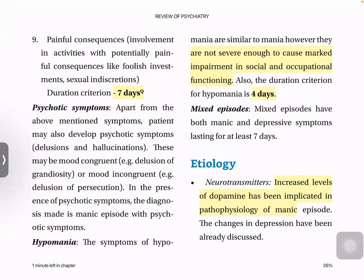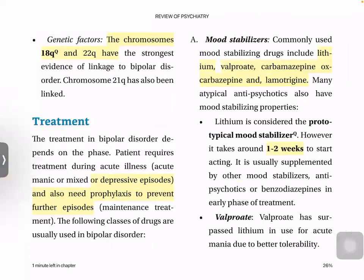Psychotic symptoms like delusions and hallucinations can also be present in mania — again, mood congruent or mood incongruent. Hypomania is similar to mania but not severe enough to cause social and occupational impairment. The duration criterion for hypomania is four days. In mixed episodes, both manic and depressive symptoms are present and should last at least seven days. Dopamine is increased in manic episodes. Genetic factors link bipolar to chromosomes 18 and 22q.